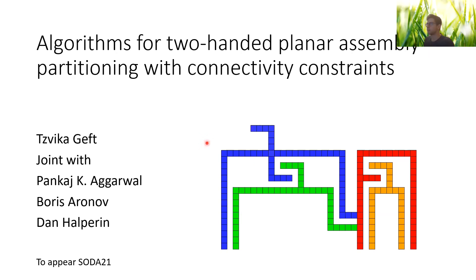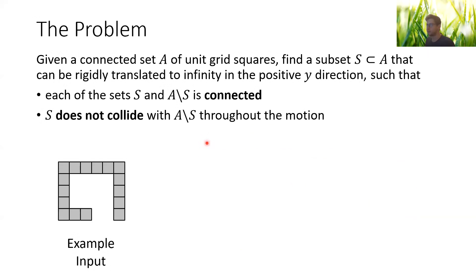We'll jump right ahead to the problem we'll be talking about today. We're given a connected set A of unit grid squares, and our task is to find a subset S of A — a non-trivial subset that can be rigidly translated to infinity in the positive y direction — such that the subset and its complement are both connected and there is no collision during the motion between S and its complement A minus S.